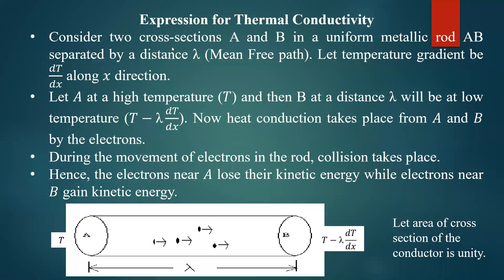Consider two cross-sections. Let us take a metal rod having total length lambda. The total length of the rod is exactly equal to lambda, which is the mean free path of the electron. Consider two cross-sections A and B in a uniform metallic rod AB separated by distance lambda.